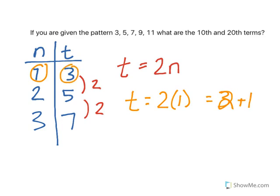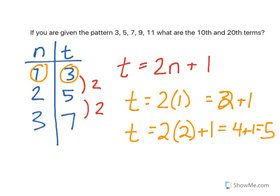I'm going to try adding that to our equation. I'm going to try it for the next term just to see if it works. t equals 2 times 2 plus 1, which gives me 4 plus 1, which gives me 5, which is my answer there. So that confirms that my equation is t equals 2n plus 1.